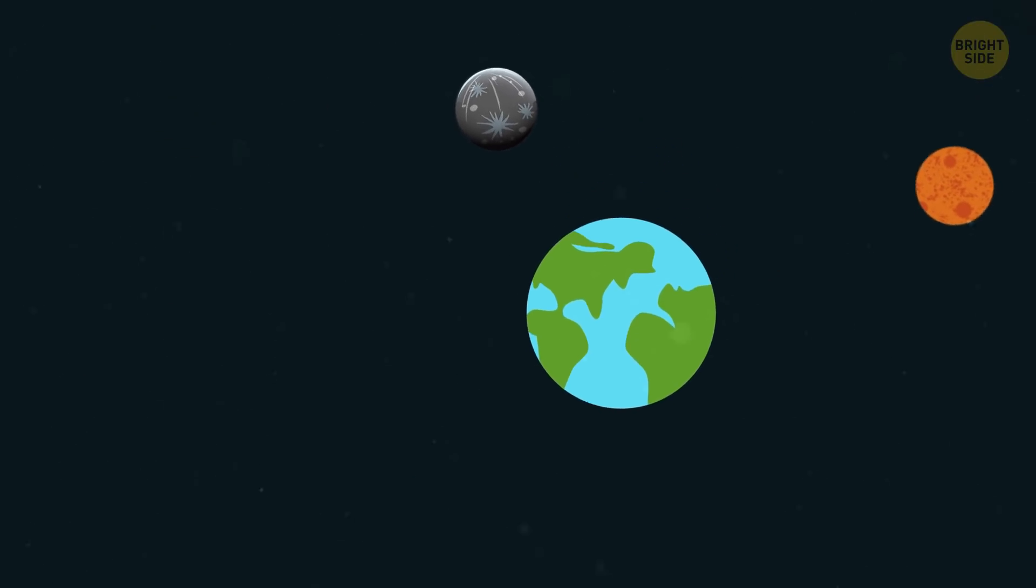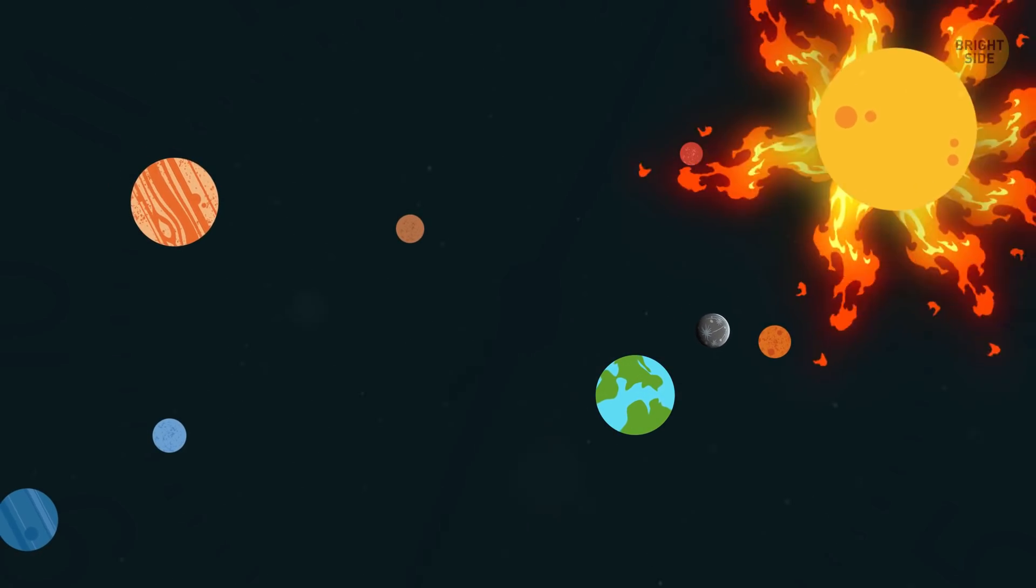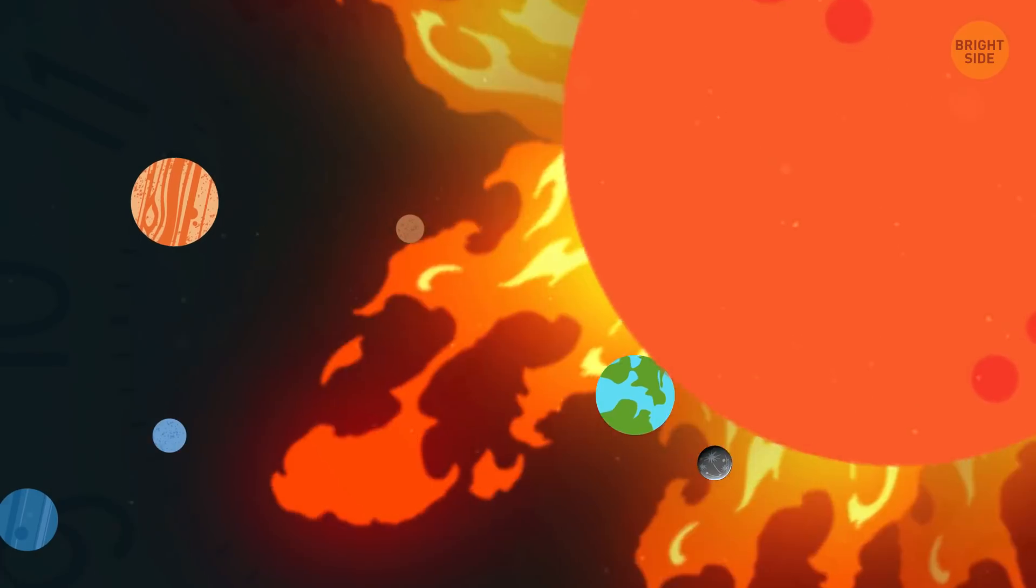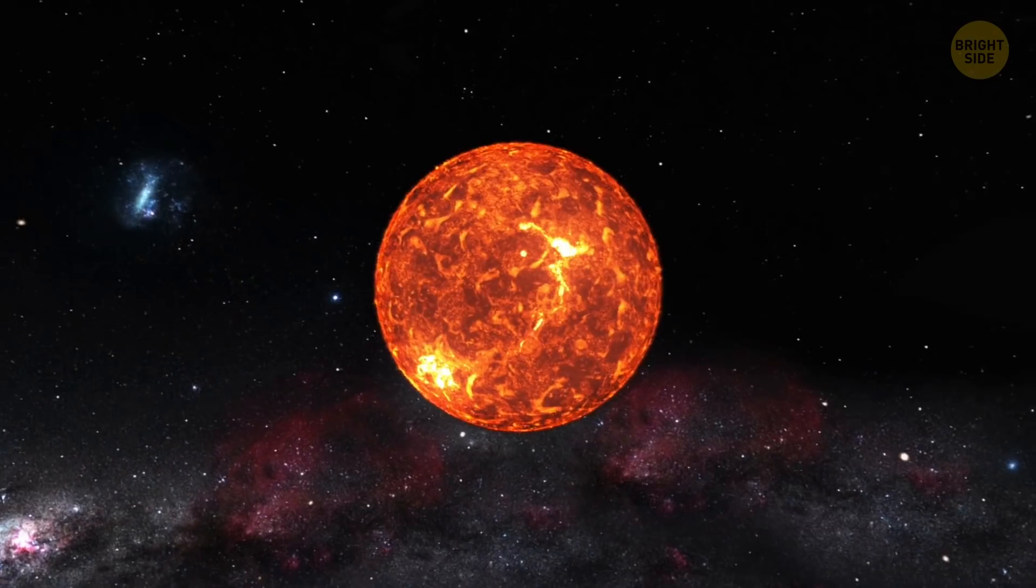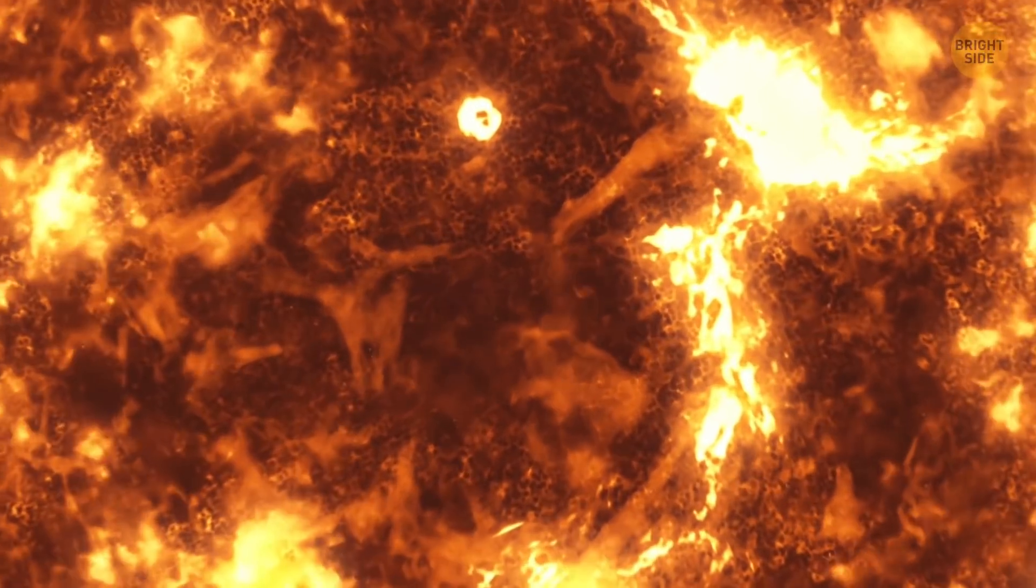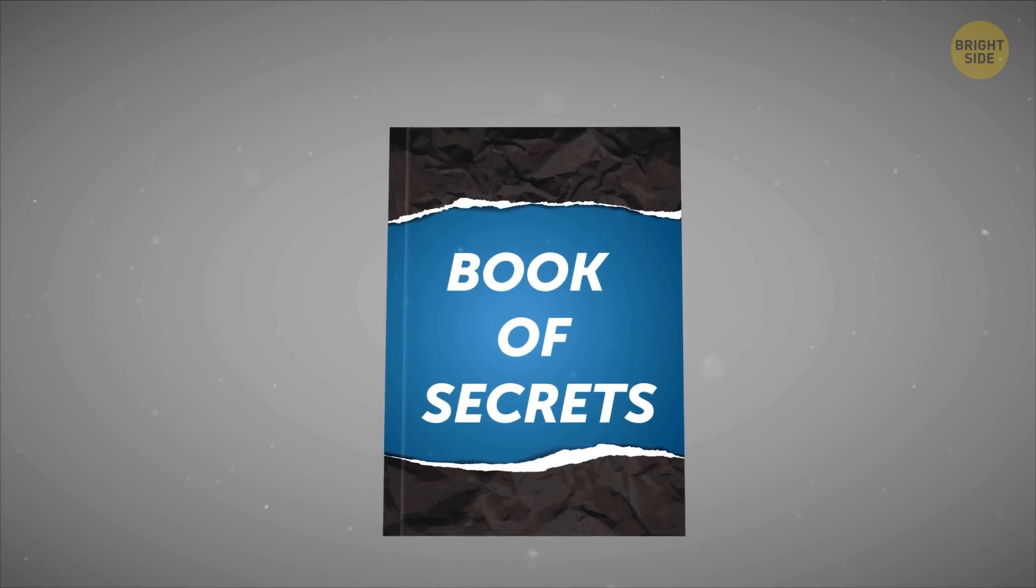You see, neither our planet nor the satellite has any chances to survive anyway. By that time, the Sun will have already expanded, turning into a raging red giant with a diameter of about the size of the Earth's orbit and destroying everything around, including my iPhone! But let's get back to much more cheerful stuff.